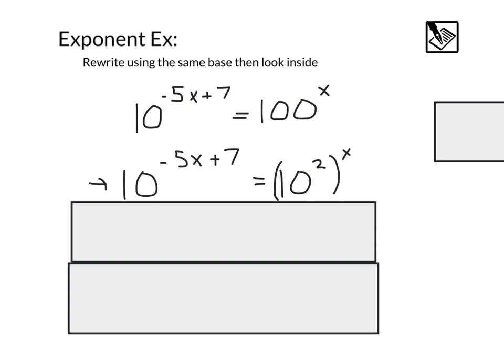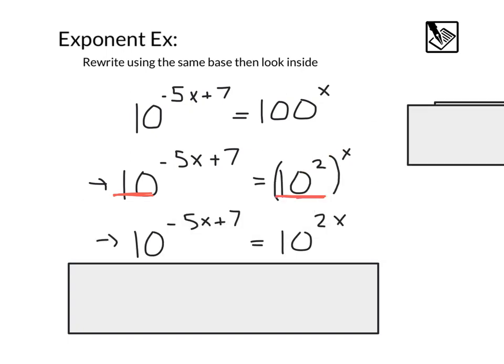And this is very helpful because now we have a base of 10 on the left and a base of 10 on the right. And if I do my exponent multiplication to the power of 2 to the power of x, that would be 2 times x or 2x. We'd get this down here. 10 to the negative 5x plus 7 equals 10 to the 2x. And if the bases are the same, in this case they are both 10, that means that the exponents also need to be the same.